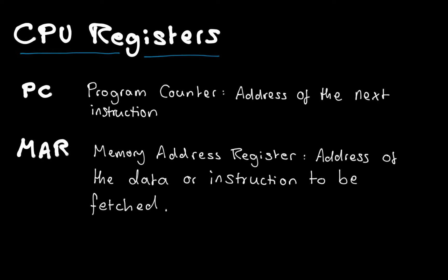The memory address register, or MAR, contains the address of the data or the instruction to be fetched. You can think of it like a post office — it's the link between the CPU and main memory. We put the address of whatever we want to get from main memory into the MAR, whether that's data or an instruction, and then it goes off via the address bus and grabs it. Whereas the program counter contains the address of just the next instruction, so the program counter is a little more specific.